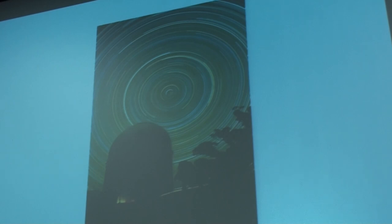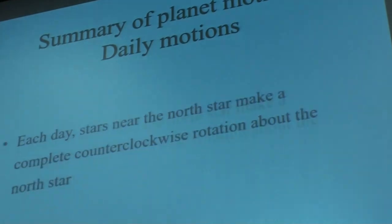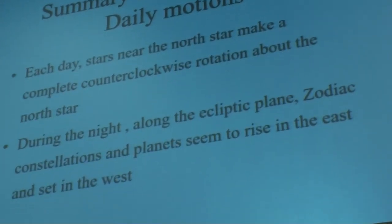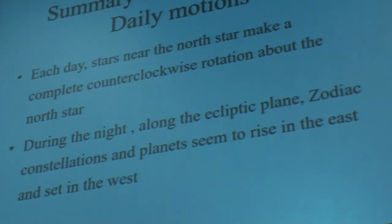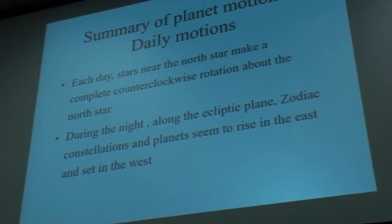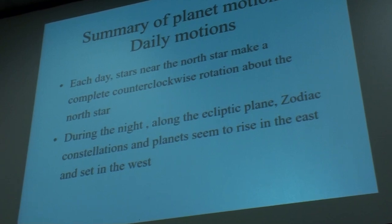The North Star is the only star that stays fixed from our point of view during the day, and the others appear, because of the Earth's rotation, to be describing counterclockwise circles. But at night, if we look along the ecliptic plane, what we find is that constellations and planets seem to rise in the east and set in the west.